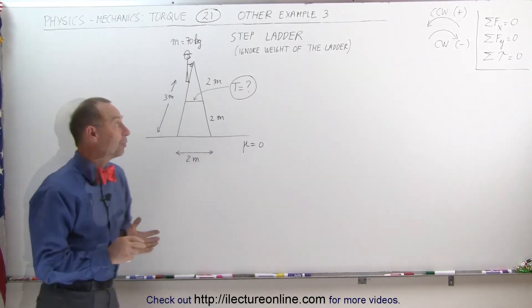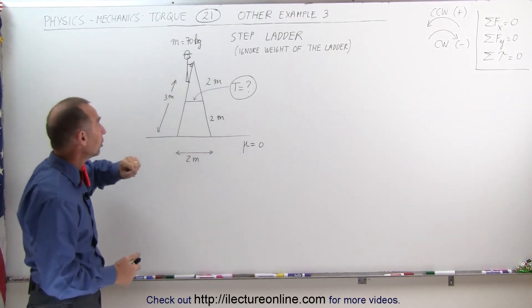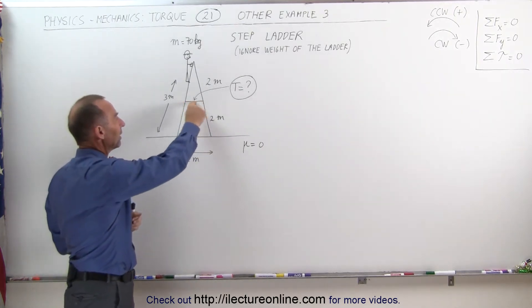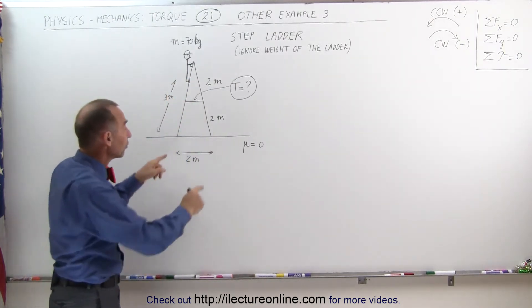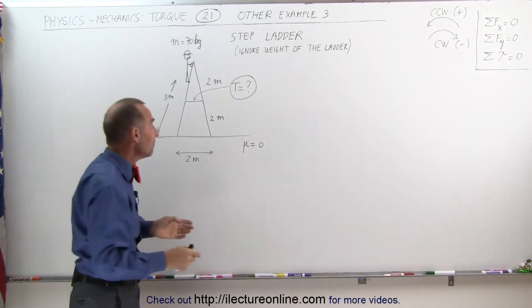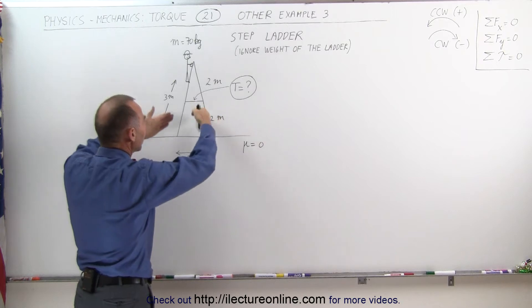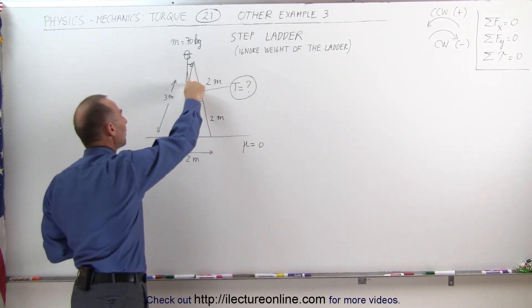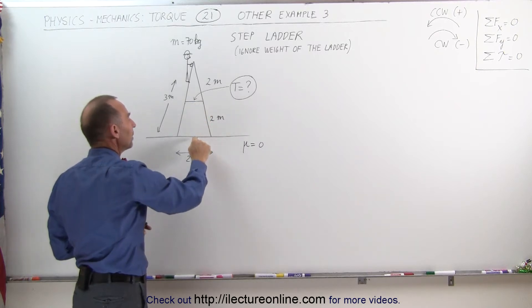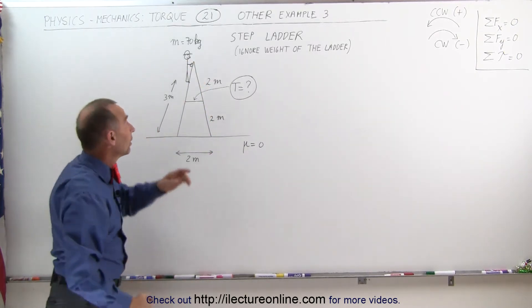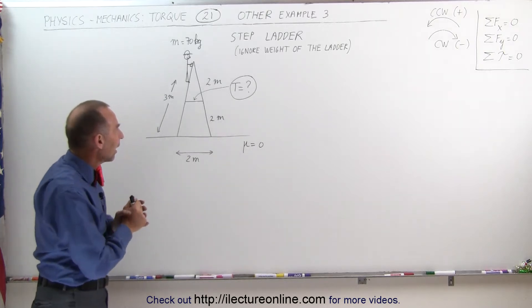Welcome to ElectronLine. Here we have another example involving the concept of torque. We have a stepladder, a rather tall stepladder — it's two meters tall. Notice that it's set up with a cable or rope holding the two ends of the ladder together. If we assume there's no friction between the ladder and the floor, the question is what will be the tension on this string to keep the two ends of the ladder from slipping outward. A person is about three-quarters of the way up at a height of three meters, and the rope is tied at the halfway point. The person is 70 kilograms, and we'll ignore the weight of the ladder to simplify the problem.